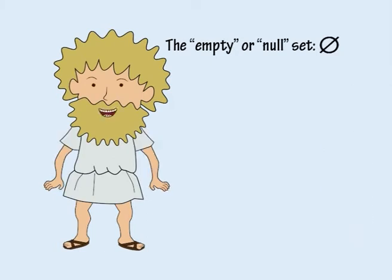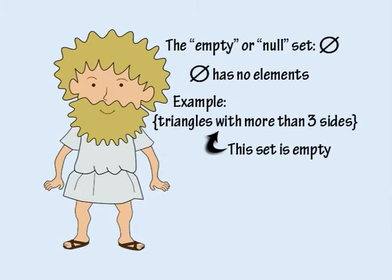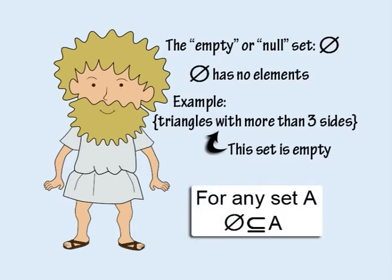Finally, we should also mention the empty or null set. This is the set with no elements at all. For example, the set of triangles with more than three sides is empty, because there are no triangles with more than three sides. The empty set is said to be a subset of every set, because there are no elements in the empty set that cannot be found in every other set.